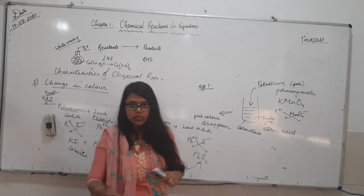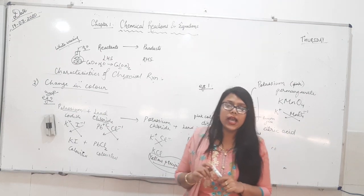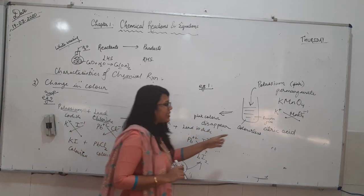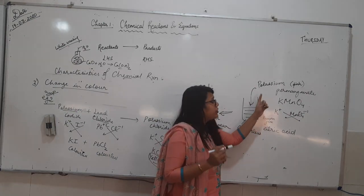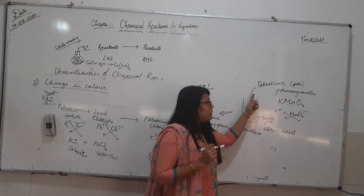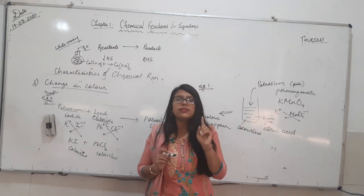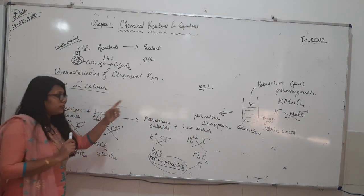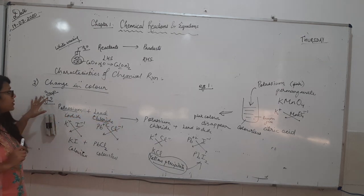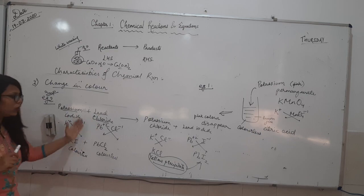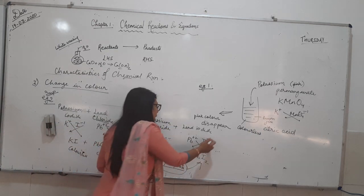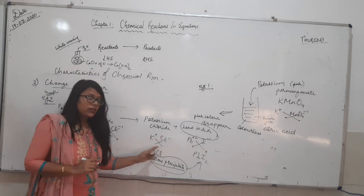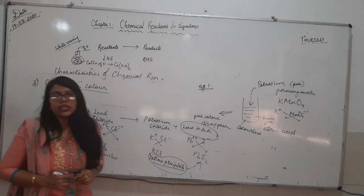Revision of the third characteristic — change in colour: First example, KMnO4 which is pink in colour is poured into citric acid solution — the pink colour disappears. Second example, potassium iodide plus lead chloride forms potassium chloride plus lead iodide — the yellow precipitate of lead iodide formed shows the change in colour. You need not show the reaction formula for the first example.